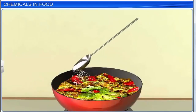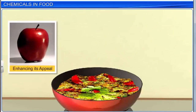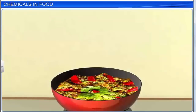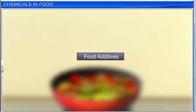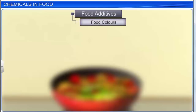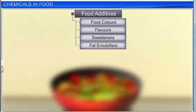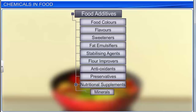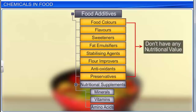Chemicals are added to food for various reasons, such as enhancing its appeal or nutritional value, and to preserve it. There are various categories of food additives: food colors, flavors, and sweeteners; fat emulsifiers and stabilizing agents; flour improvers; antioxidants; preservatives; and nutritional supplements such as minerals, vitamins, and amino acids. Note that, except for nutritional supplements, none of the additives mentioned have any nutritional value — they are added either to prolong storage time or for cosmetic purposes.